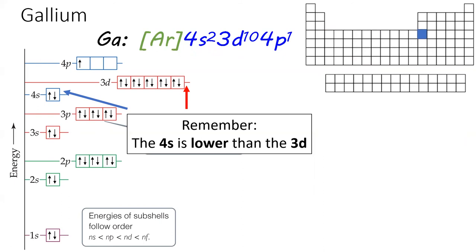The next element, gallium, has its outermost electron placed in the next available energy level, the 4p subshell.